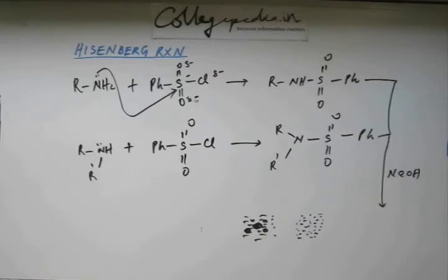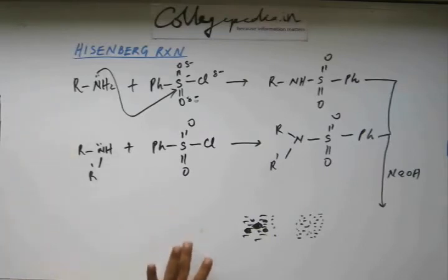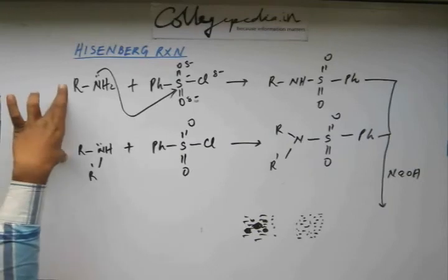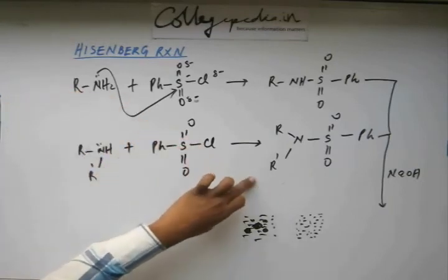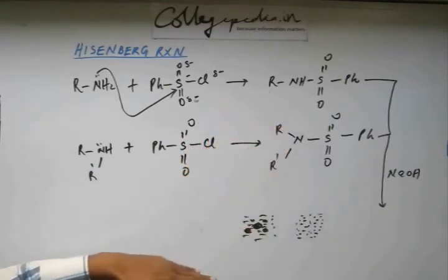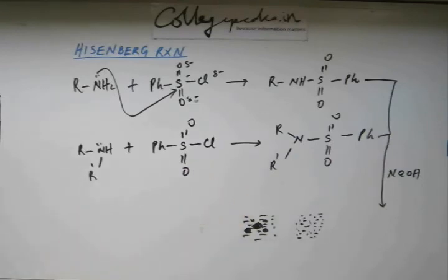That's what the Hinsberg test is all about. To underline the important points: you make the amine react with phenyl sulfonyl chloride — if there is no reaction, it's a third degree amine; if there is a reaction, it can be first or second degree. Then with the phenyl sulfoxamide formed, you make it react with a base — if it dissolves, it's a first degree amine; if it doesn't dissolve, it's a second degree amine. Using both steps, we can identify whether the given amine is first, second, or third degree.